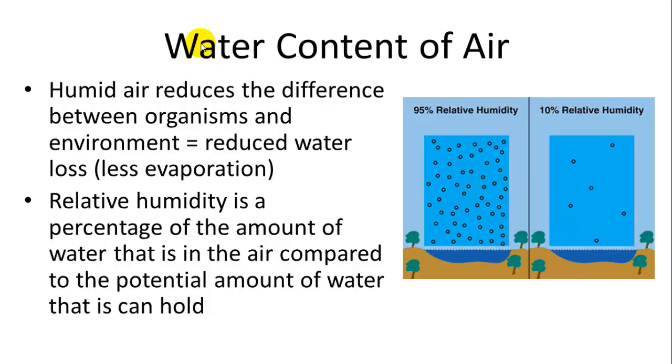So the first thing we have to talk about is the water within the air. So water will evaporate and become water vapor and become a gaseous form. And if air is very humid, then the water in the air can reduce water loss through less evaporation. So if there's more water in the air, more water vapor, then evaporation occurs less. So a measurement of that is called relative humidity, which is a percentage.